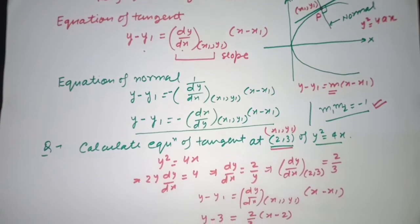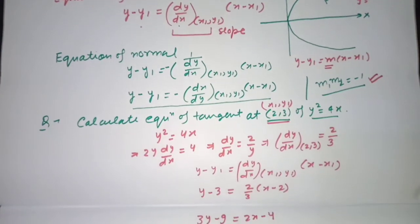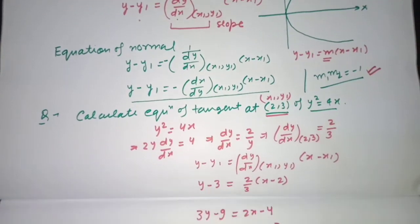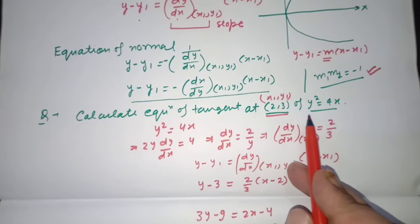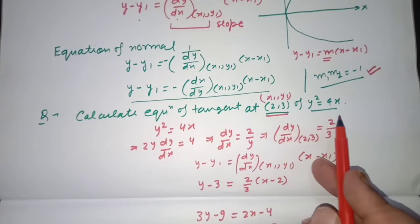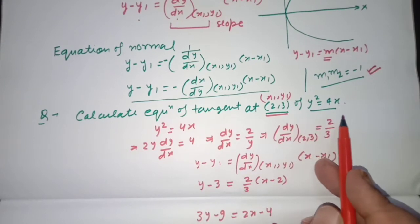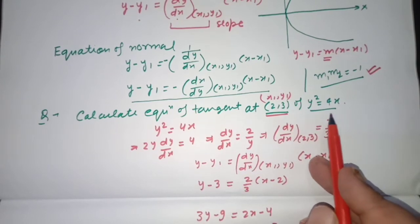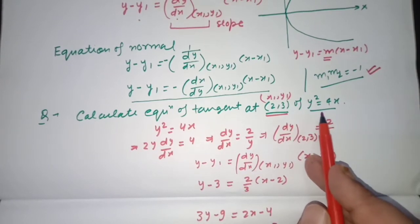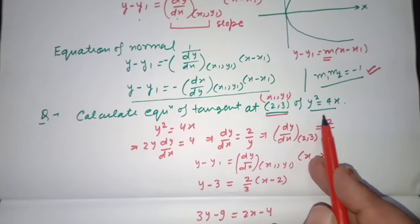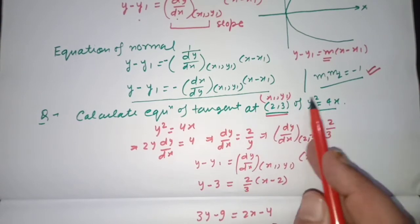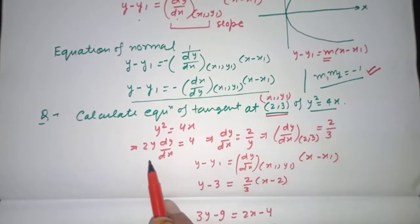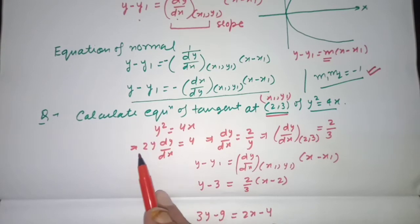Now let's look at a question. Suppose you have to calculate the equation of tangent at point (2, 3) of the curve y² = 4x. The curve is given and the point of contact is given. We will calculate the slope by differentiating the curve equation.